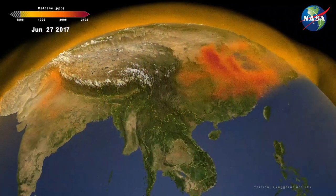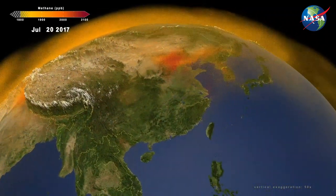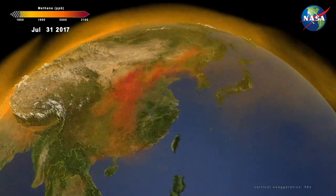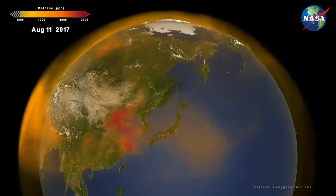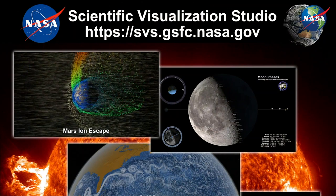Scientists around the world are working together to better understand our global methane budget with the goal of reducing greenhouse gas emissions and improving global predictions. I hope you like these visualizations — if you do, please come see our website. We have a few other visualizations coming up showing Earth as an interconnected system of systems, showing how our ocean currents, clouds, precipitation, changes in our ocean, ozone, and vegetation changes in our land can all be interconnected. This is NASA at Home and I'm Lori Perkins. Thanks for watching.